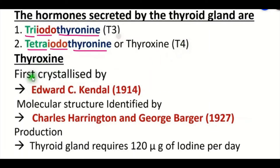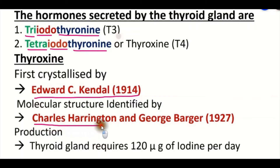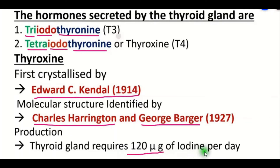Thyroxine hormone was first crystallized by Edward C. Kendall in 1914. Charles Harrington and George Berger identified the molecular structure of thyroxine in 1927. The thyroid gland requires 120 micrograms of iodine per day for the production of thyroxine.